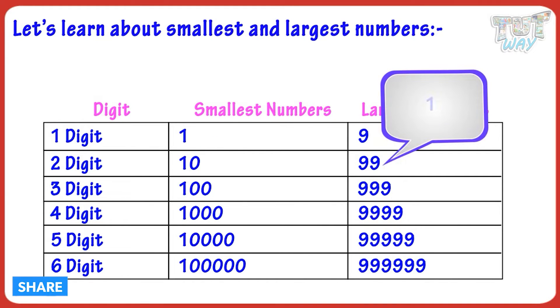If you add 1 to the biggest two-digit number, you get the smallest three-digit number.